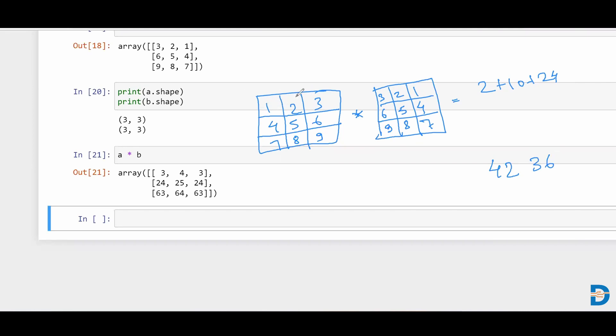Similarly, this row is again multiplied with the last column of the second matrix. So one multiplied by one is one, two multiplied by four is eight, and three multiplied by seven is 21. So the result is 30. So it goes like 30.